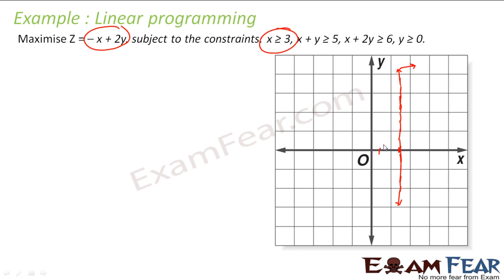This is done. Next, x + y = 5: the point (0, 5) and (5, 0) are on this line. Let's join these. Also, x + 2y = 6: put x = 0 to get y = 3, put y = 0 to get x = 6. So the points are (0, 3) and (6, 0). Let's join these lines on the graph.